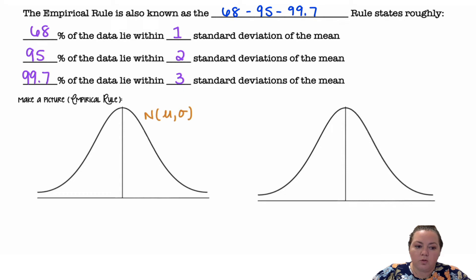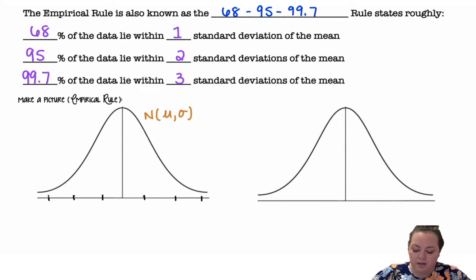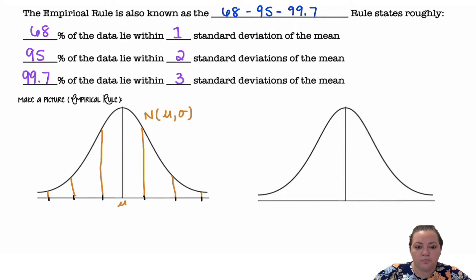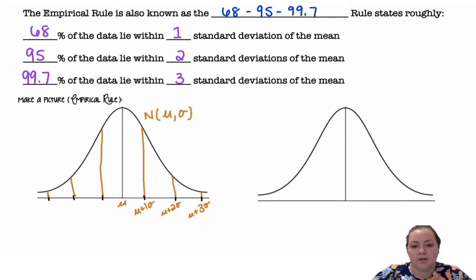We have a normal distribution, and we are going to go three standard deviations above and below the mean. The mean goes in the center, which is mu. As I move to the right, I'm adding one standard deviation every time: mu plus one sigma, mu plus two sigma, mu plus three sigma. Sigma represents the standard deviation.